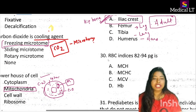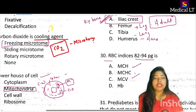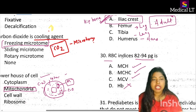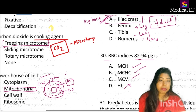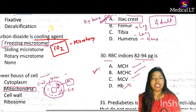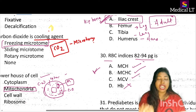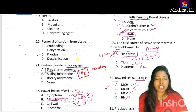The next question: RBC indices 82 to 94 PG — the answer options are MCV, MCH, MCHC, or hemoglobin. RBC indices include MCV, MCH, and MCHC. The unit of 82 to 94 picograms — the correct answer of this question will be MCH, mean corpuscular hemoglobin. That is all for today. We solved 10 important questions. See you in the next class — keep watching this video and keep practicing questions. Thank you.